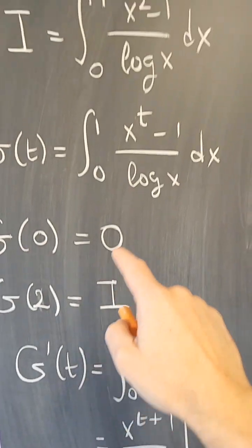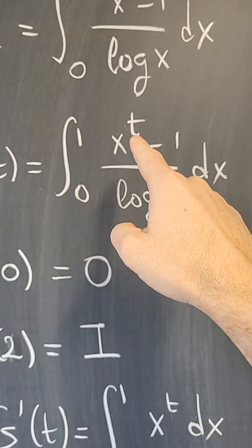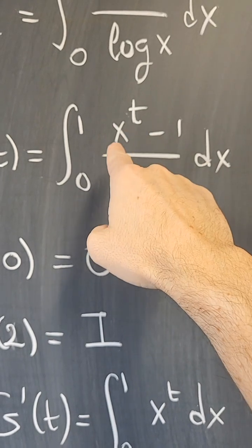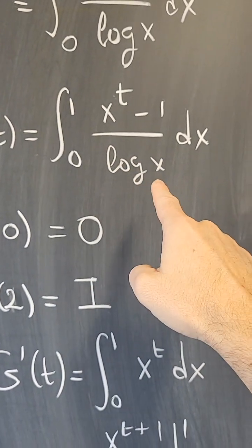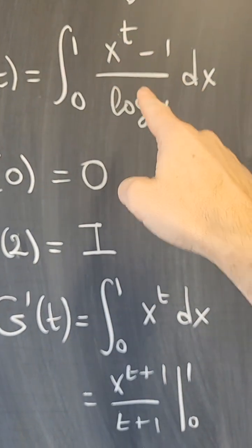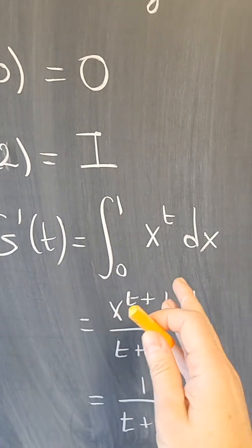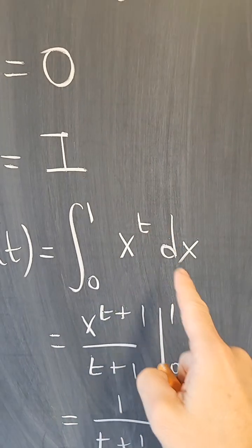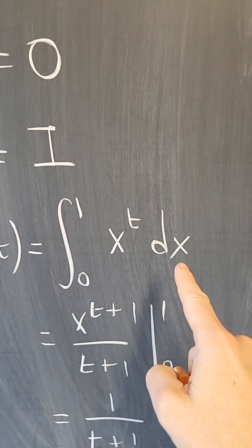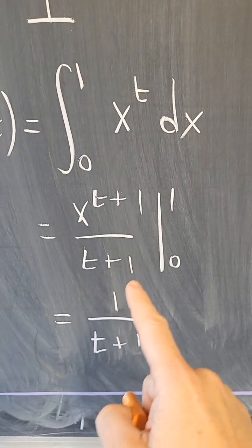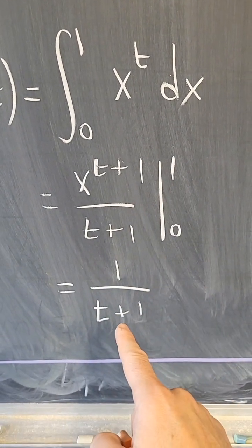So now, what is the derivative? The derivative of x to the t with respect to t is x to the t times the log of x, which will cancel this log of x, so the derivative of this with respect to t is just x to the t, which is easy to integrate. Because x to the t dx, now t is a constant with respect to x, so this is x to the t plus 1 divided by t plus 1, so the value is 1 over t plus 1.